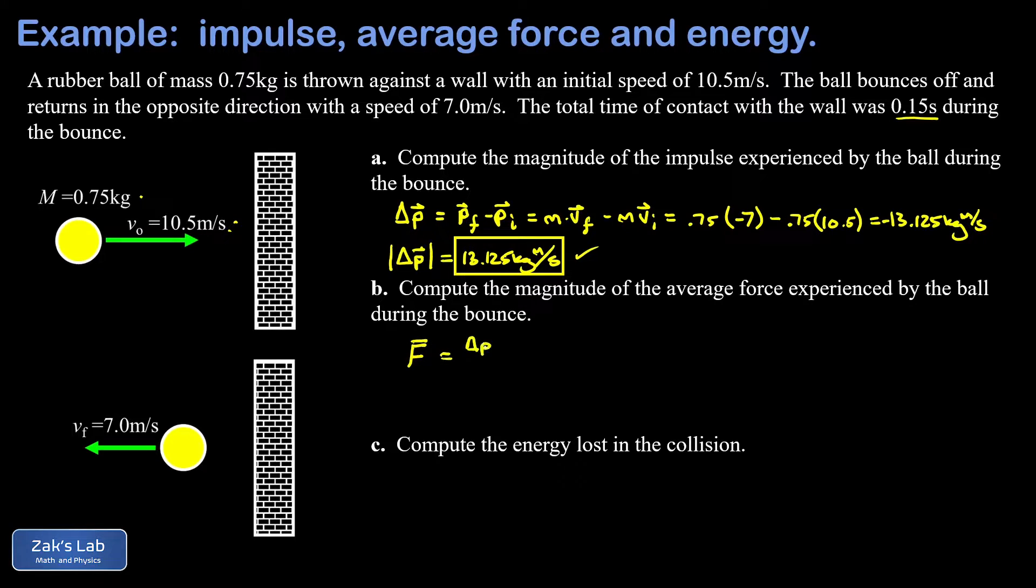We could write this as a vector equation which introduces the minus sign back in because our impulse pointed to the left. We divide by how long it took to change the momentum by that much, that's 0.15 seconds.